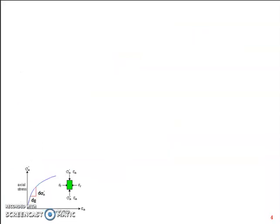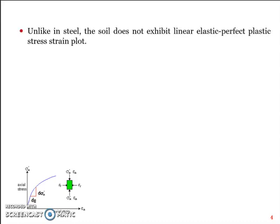Now there are different ways to estimate the Young's modulus of soil. Unlike in steel, the soil does not exhibit a linear elastic-perfectly plastic stress-strain plot, which means it doesn't go straight and then perfectly plastic. You can't expect that for soil. Even you can't expect that for steel, but still for the sake of analysis some people used to assume that steel behaves that way, but it really isn't.